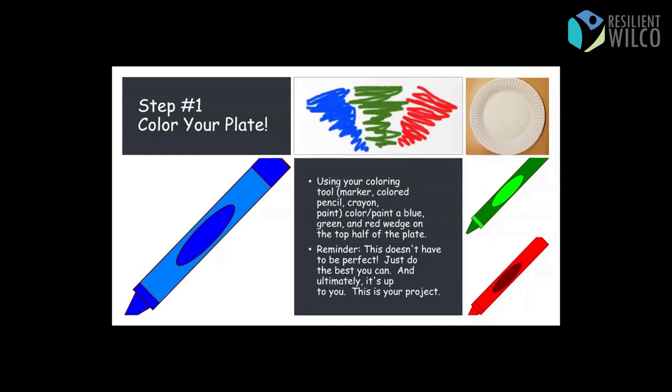So number one, color your plate. Remember when I showed you the engine plate earlier? That's what you're going to do. You're going to color three different pie pieces of the plate on the top part of the plate. Blue, green, and red. This can look however you want. It doesn't have to be perfect. Nobody's grading you. This is just for you. It's a tool for you to use. And it's your project. So do it however you want.